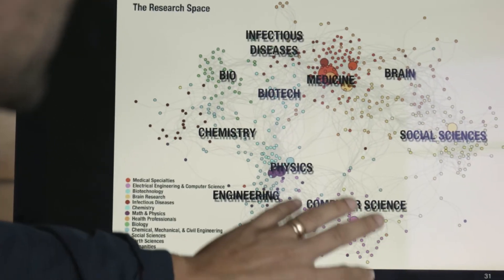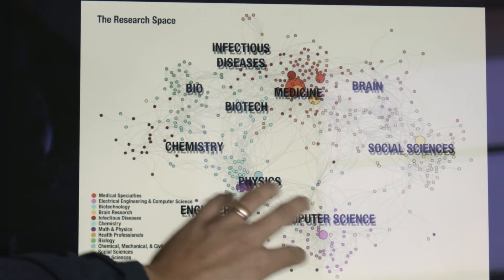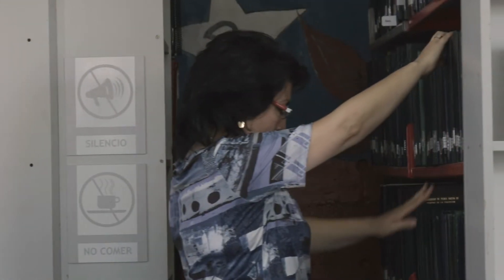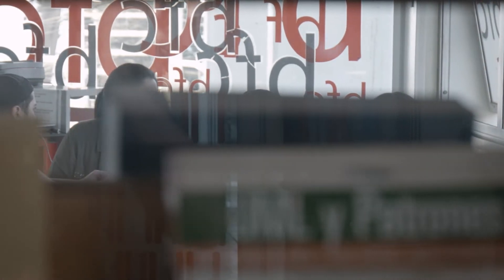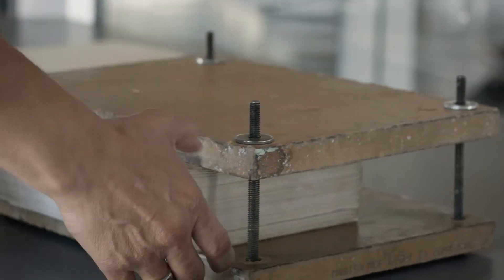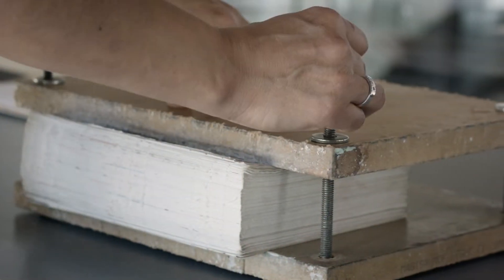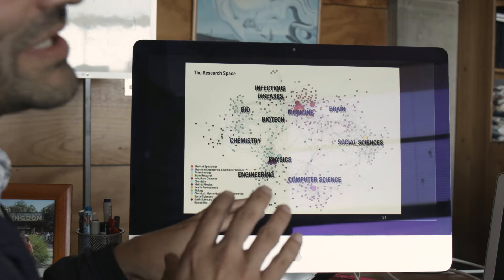Here we have the social sciences, below is computer science, physics, at the other side engineering. Everything has a sequence or a very logical position. Above you have medicine, sciences of the brain, biotechnology, chemistry, more to the left is biology, sciences of the earth, above, sciences of infection or immunology. And the size of the nodes represent how many publications are in those areas. Visually, one is also able to determine in which areas are published more and how far are some areas from others.